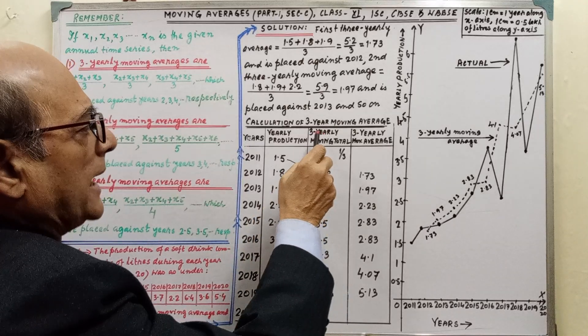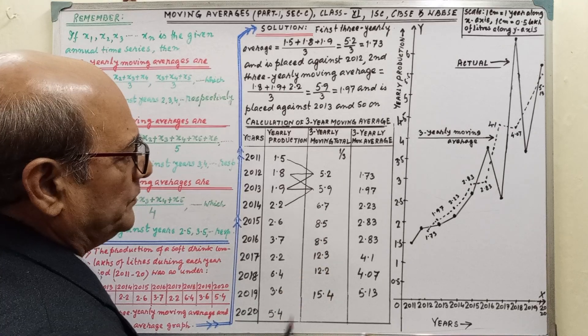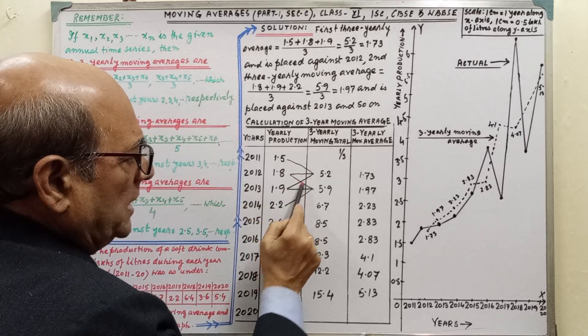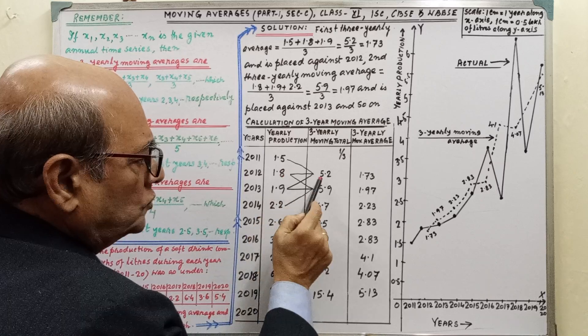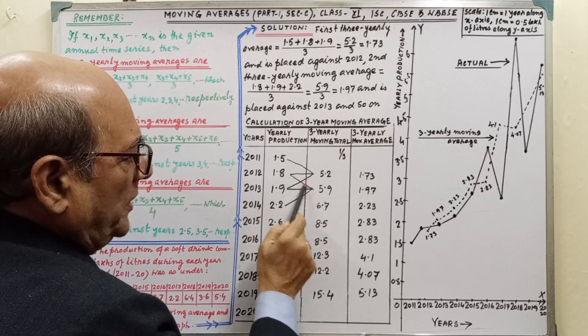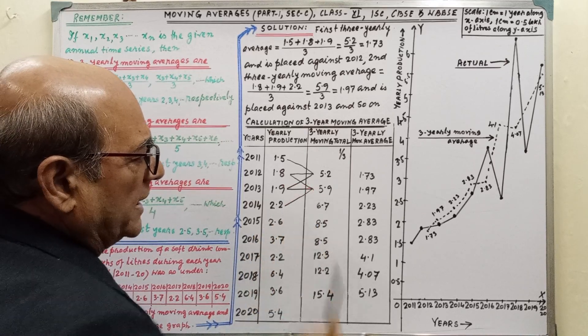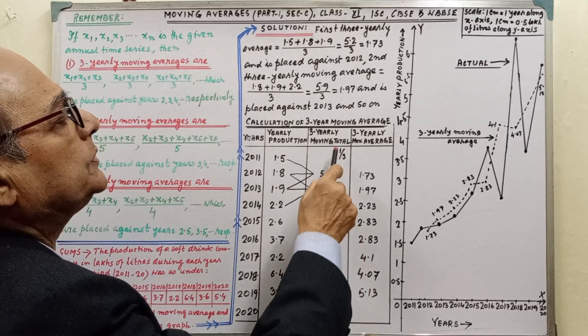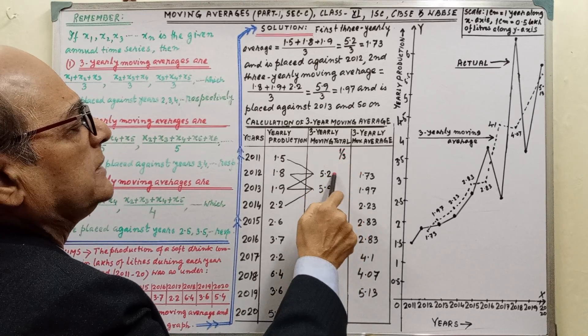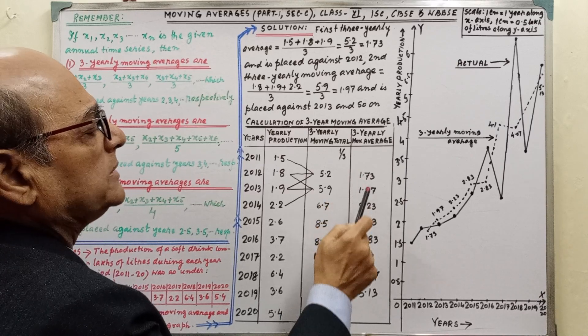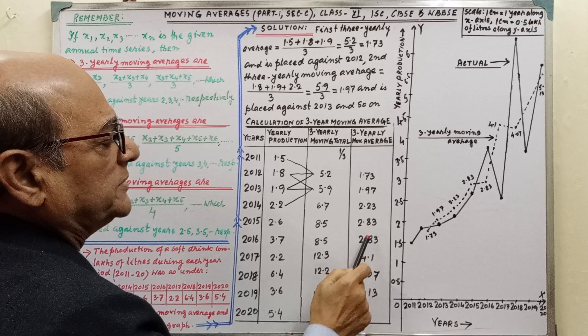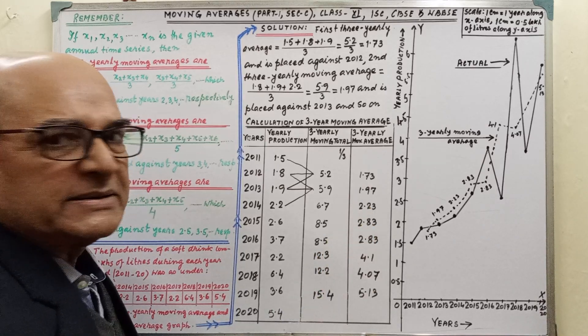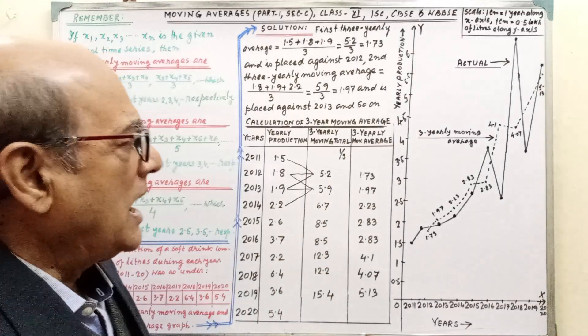Now, we have to calculate the 3 yearly moving total: 1.5, 1.8 and 1.9. By arrow sign, we are denoting, by adding, we are getting 5.2. Next, 1.8, 1.9, 2.2, by adding, we are getting 5.9. In this way, we have to do these parts. Then, we have to divide this by 3. By dividing by 3, we are getting 1.73, 1.97, 2.23, 2.83, 2.83, 4.1, 4.07 and 5.13. This very simple, by adding, we have to divide by 3.